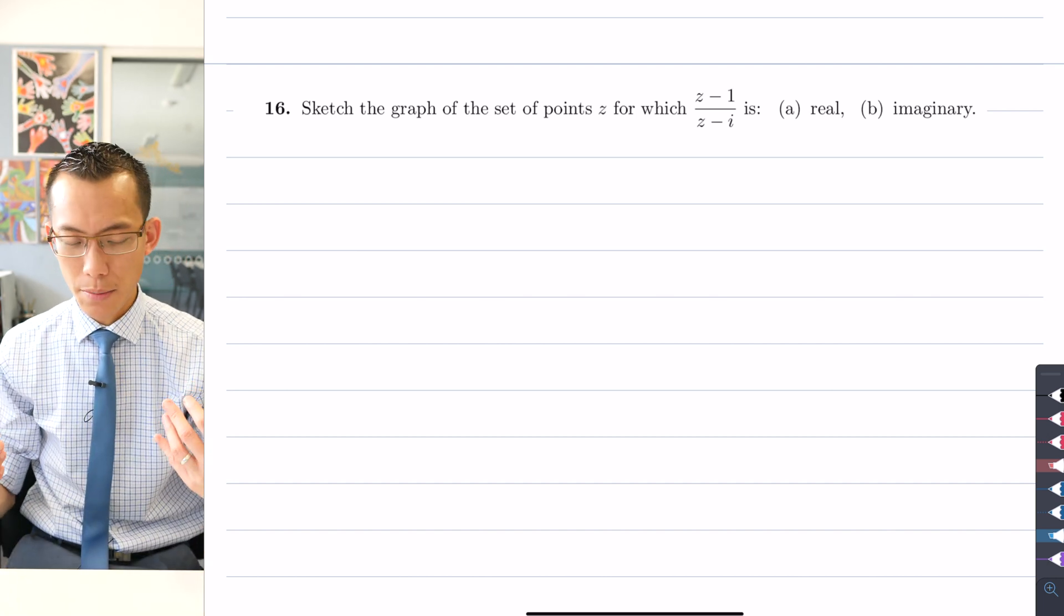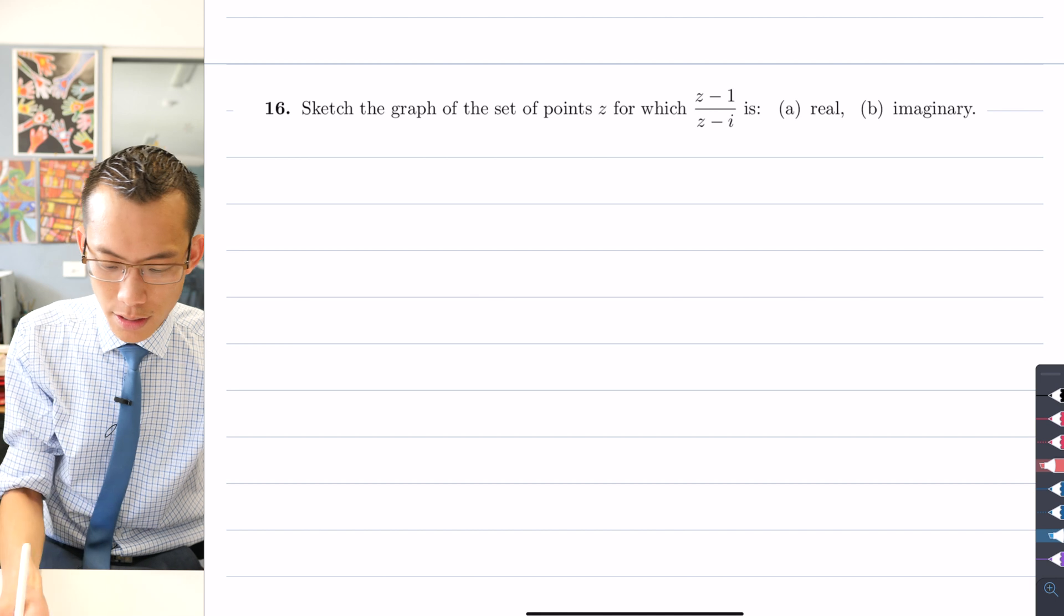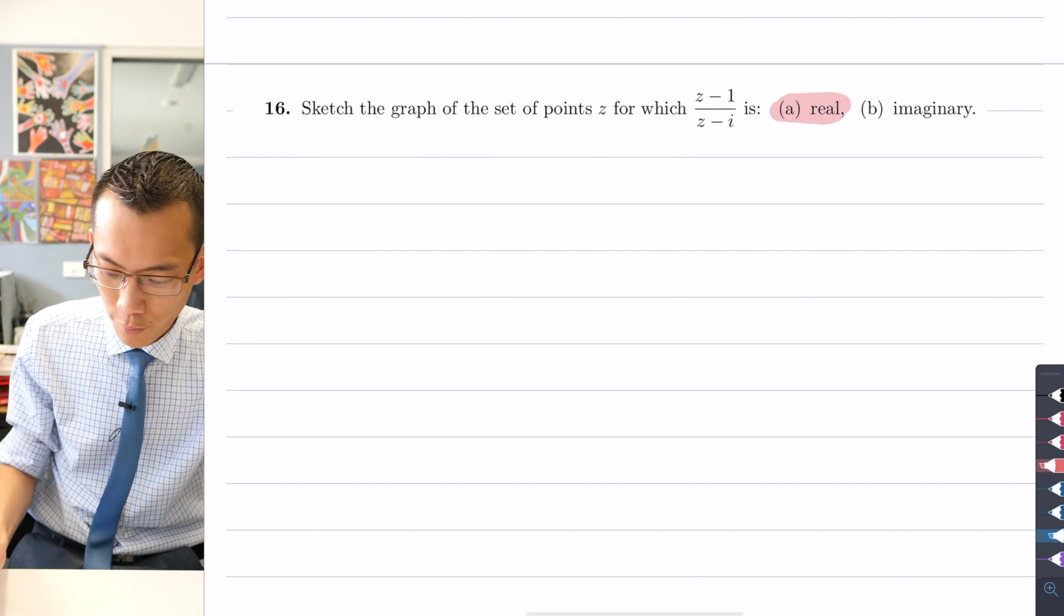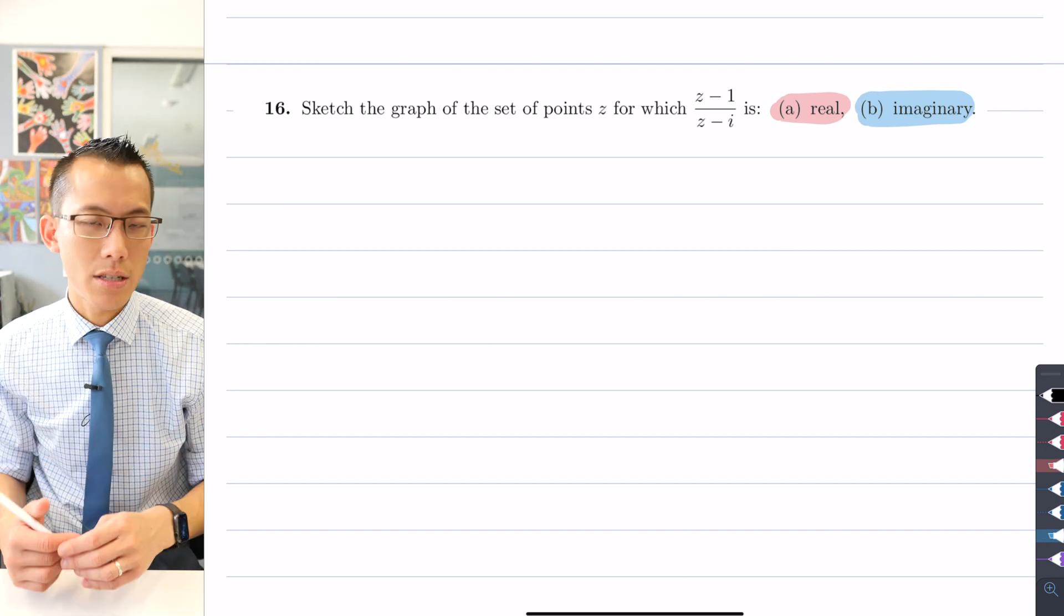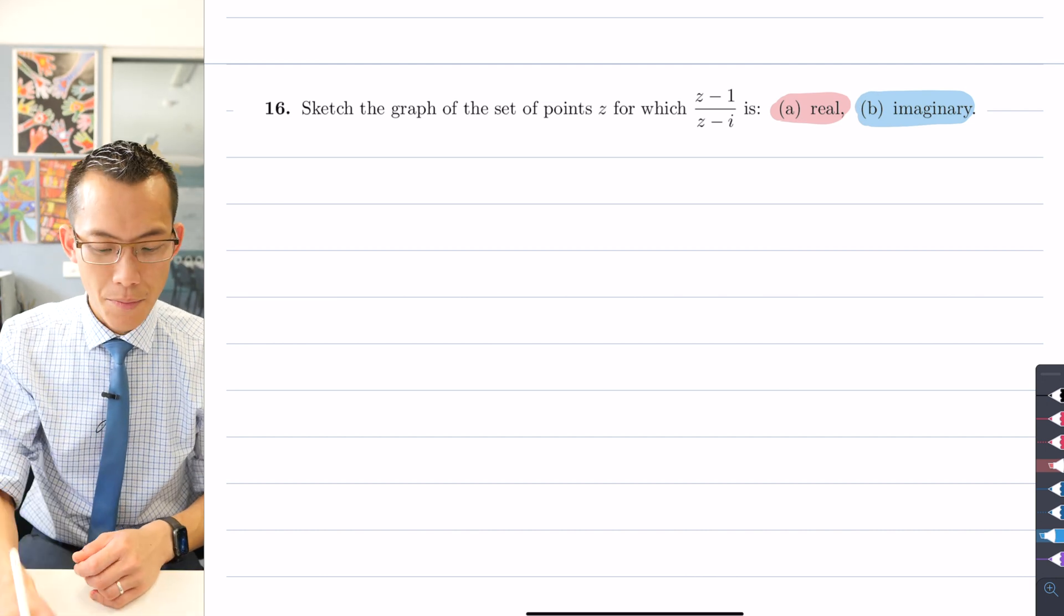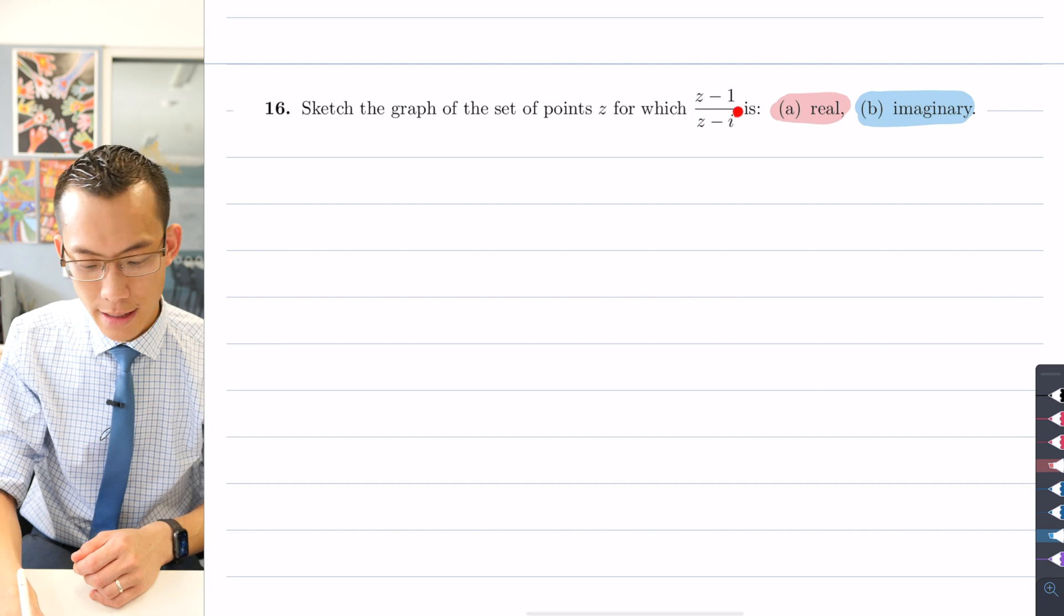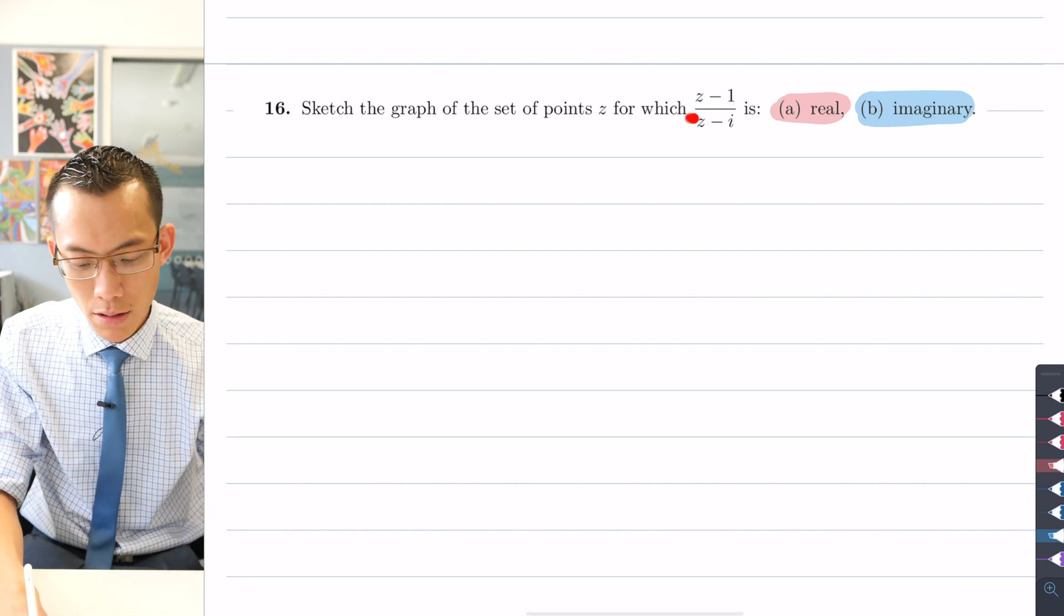Well the first thing that immediately jumps out at me is that the two parts of this question, part a asking for it to be real and part b asking for it to be imaginary, suggest to me that I'm going to need to think about this complex number z and the result that you get from (z minus 1)/(z minus i).